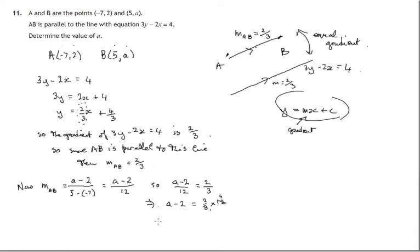So 2/3 of 12 is 8. We've got a - 2 = 8, therefore a must be 10.